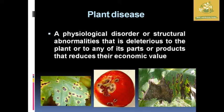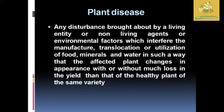In these lectures of plant pathology we are mainly going to see about plant diseases. In this first lecture we are mainly going to cover most of the eras and concepts developed by different scientists. A plant disease is defined as a physiological disorder or structural abnormality, mainly due to the deterioration of plant or any plant parts, that reduces the economic value of the particular crop in terms of yield. Any disturbance caused by a living or non-living agent or environmental factor which reduces the quality, quantity, and production of a particular crop is also known as a plant disease.